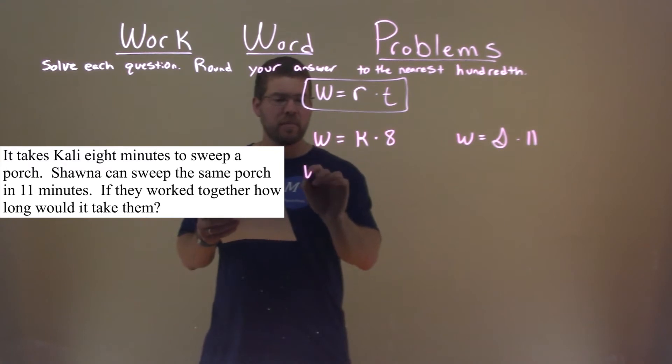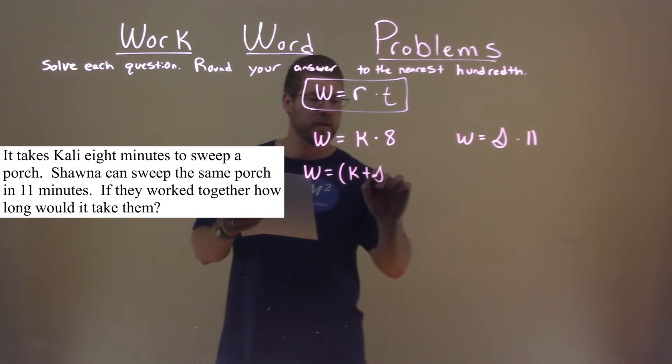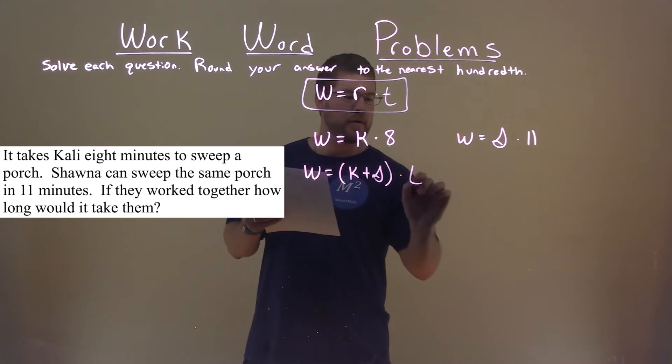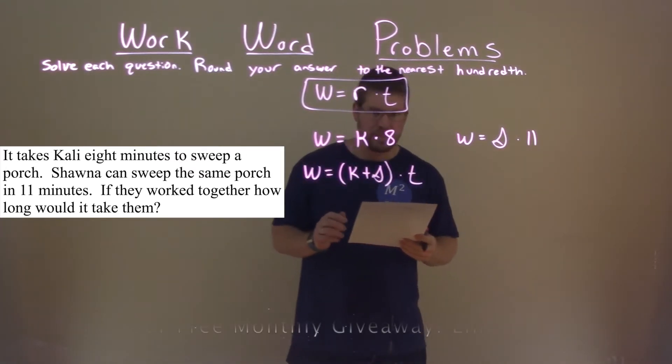The job W, sweeping the porch, is still the same value, but working together we combine their work rates, K plus S. And the formula is multiplied by some time T, and we're going to find that.